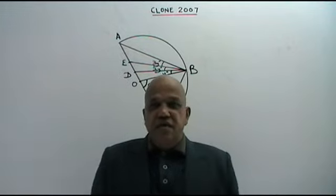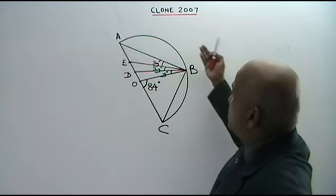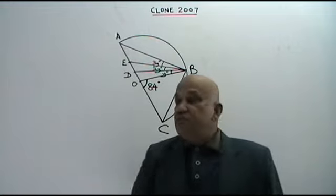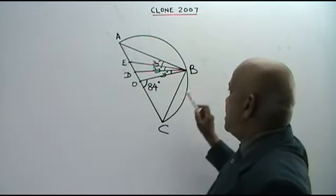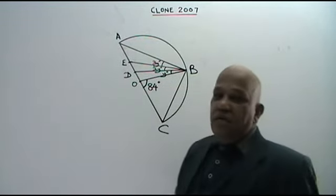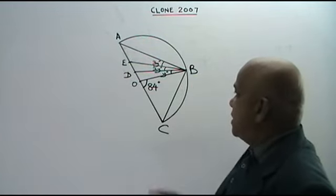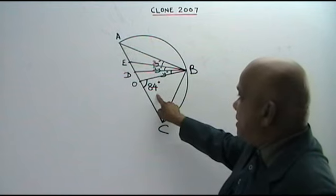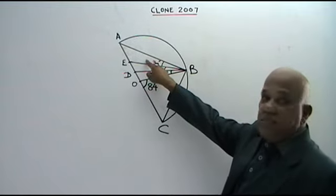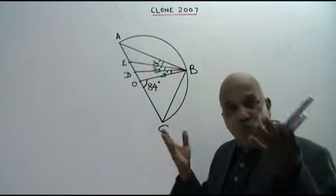Here is another clone question on circles based on the year 2007. You are given points A, B, C, O, D, E in a semicircle. O is the center of the circle. You are given that this angle is 84 degrees, and the other angles are Y, 2Y, and 3Y. You are asked to find the value of Y.